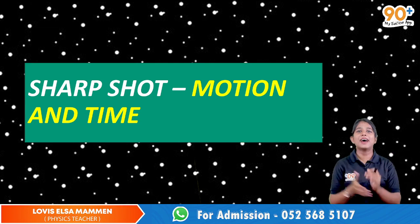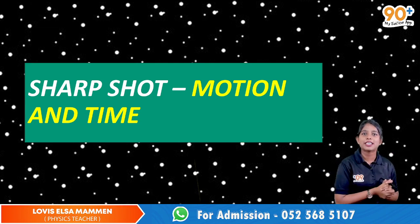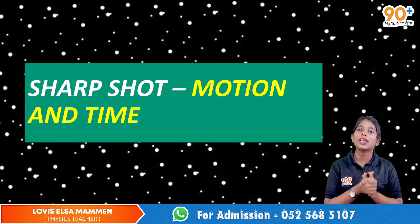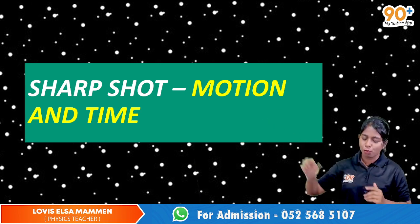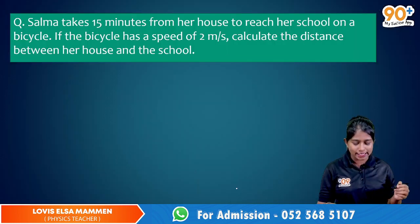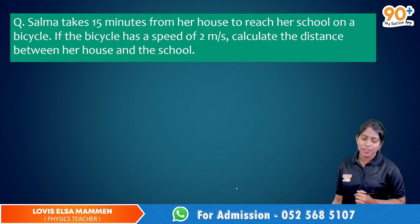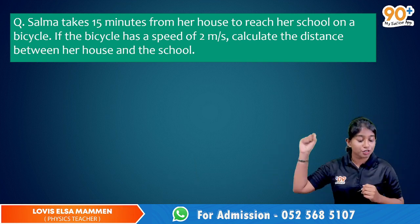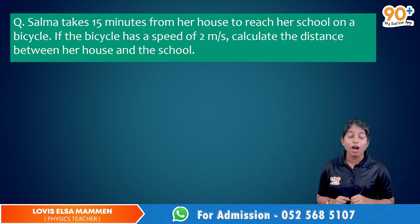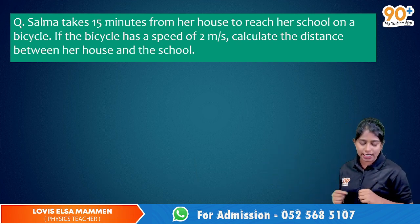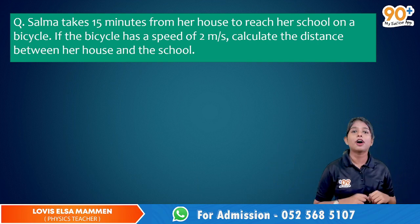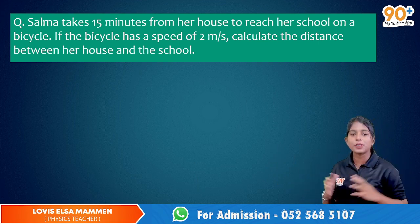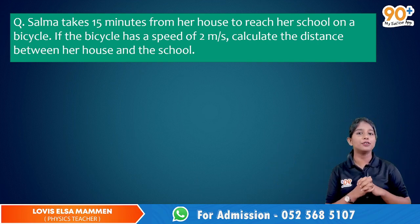Hello everyone, welcome back to the Sharp Shot series of 90 Plus My Tuition app. Here comes a very important question from the chapter Motion and Time. Salva takes 15 minutes from her house to reach a school on a bicycle. If the bicycle has a speed of 2 meters per second, calculate the distance between her house and the school.